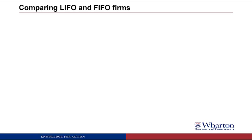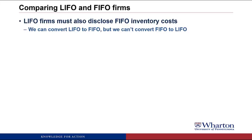To facilitate the comparison of LIFO and FIFO firms, LIFO firms have to disclose what their inventory costs would be under FIFO, so we can convert all the results of the LIFO firm to a FIFO basis. And that's the only direction we go. We can't convert a FIFO firm to a LIFO firm because a company that's always done FIFO would have to go back and look at its entire history of inventory purchases to redo it under LIFO. But if you're doing it under LIFO it's fairly easy to transfer those results to FIFO.